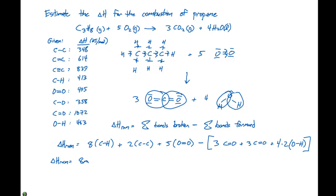So we have 8 moles times the carbon-hydrogen bond enthalpy, which is 413 kilojoules per mole, plus 2 moles times the carbon-carbon bond at 348 kilojoules per mole, plus 5 moles times the oxygen-oxygen bond at 495 kilojoules per mole.